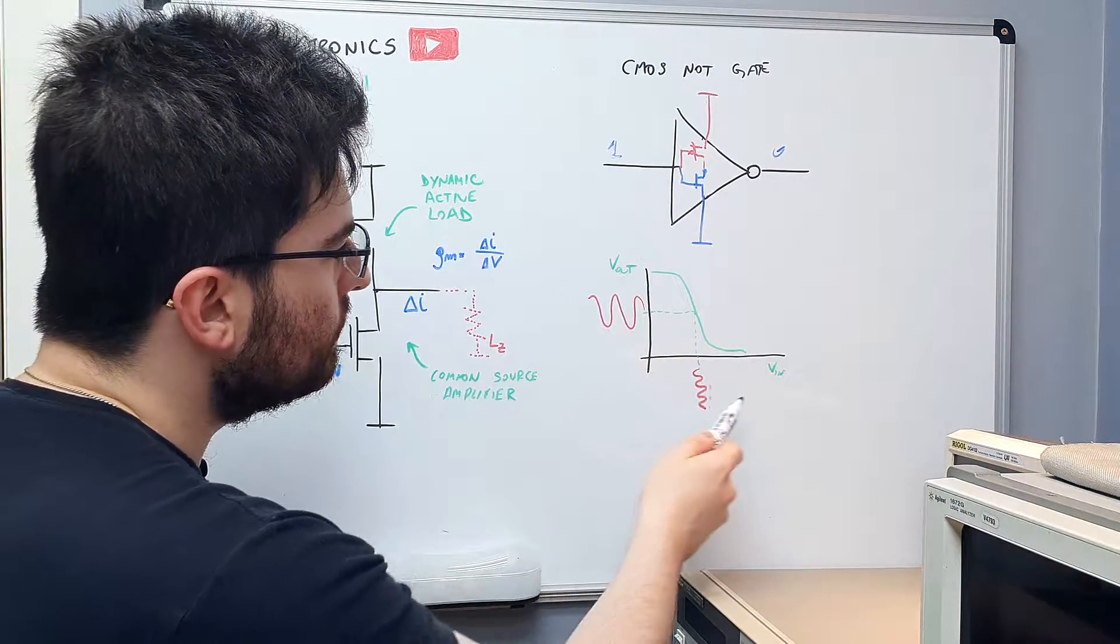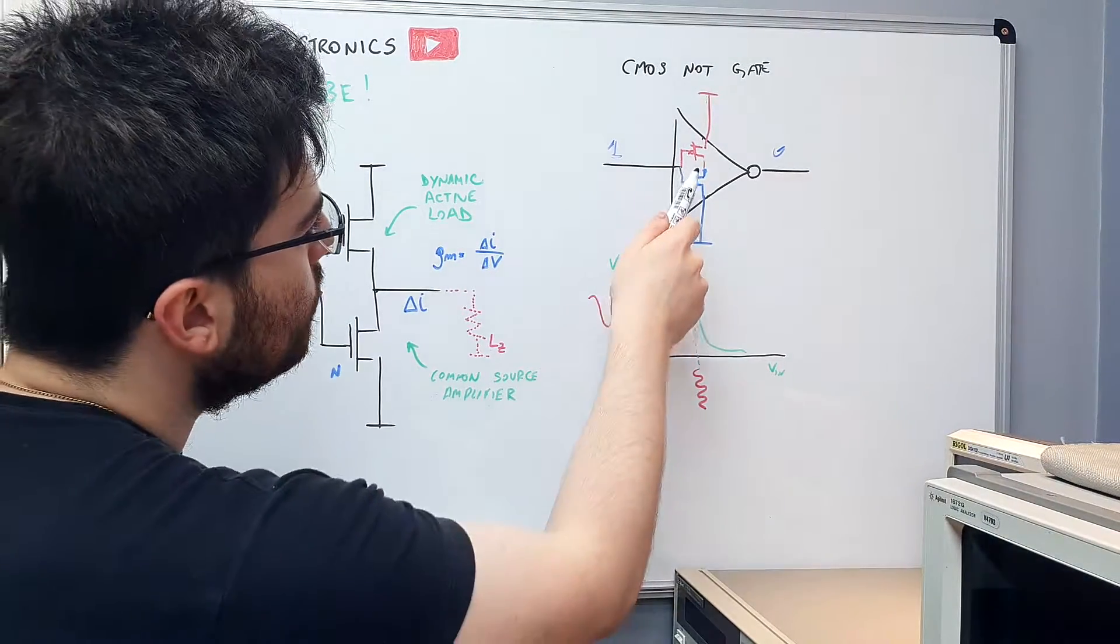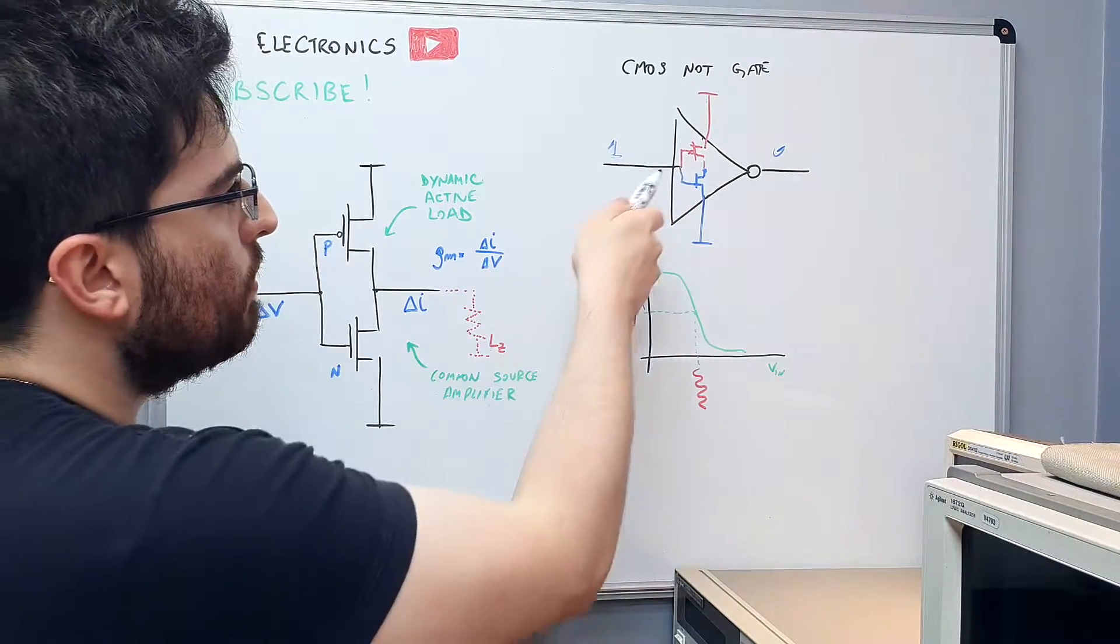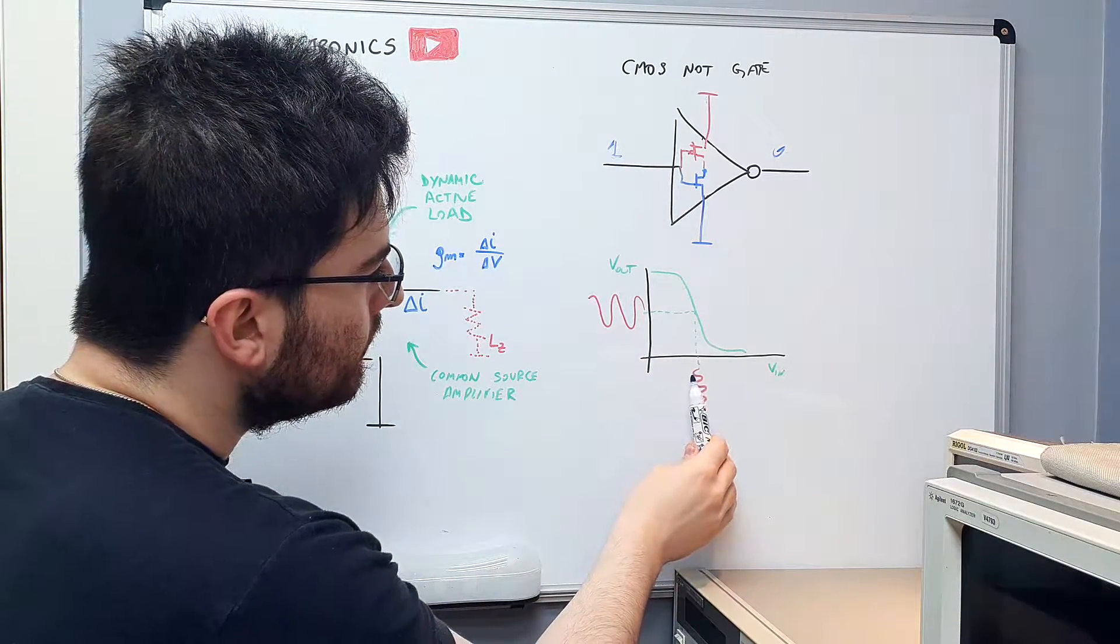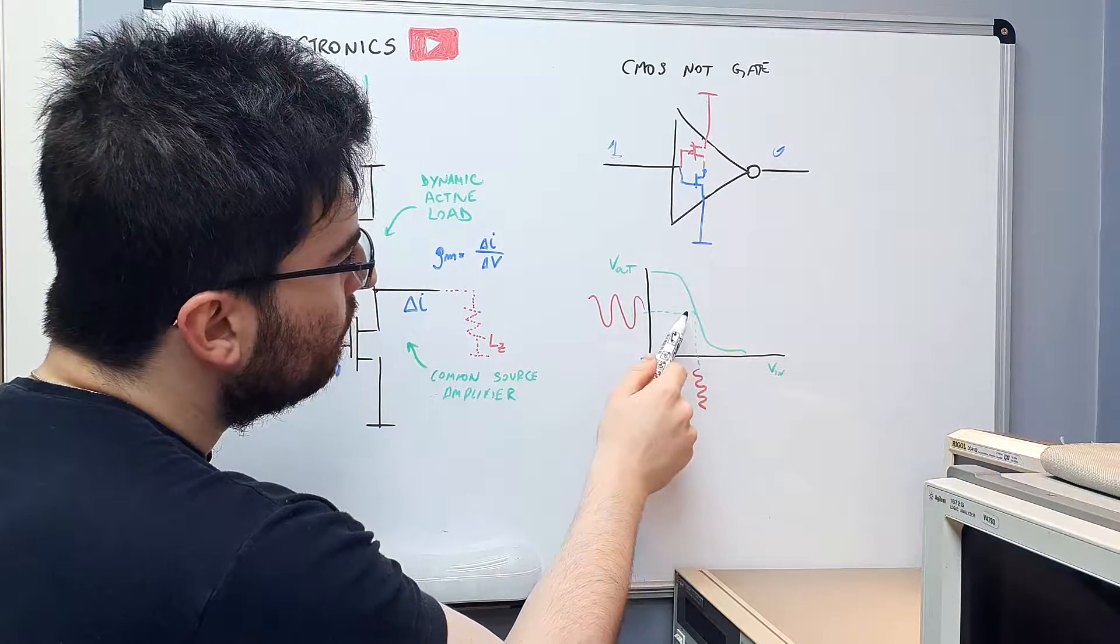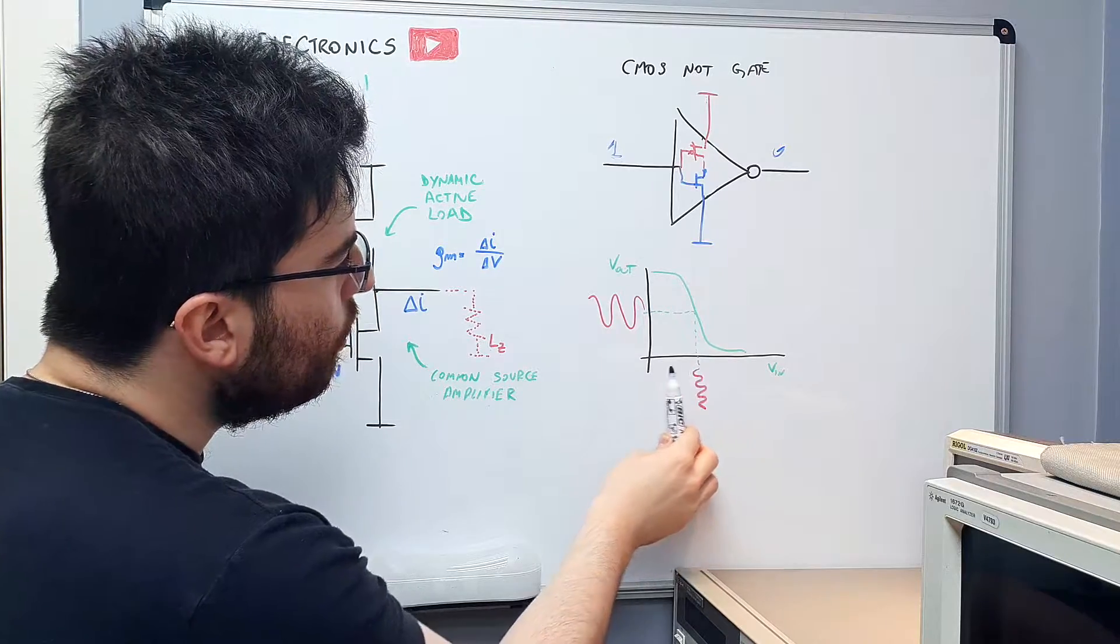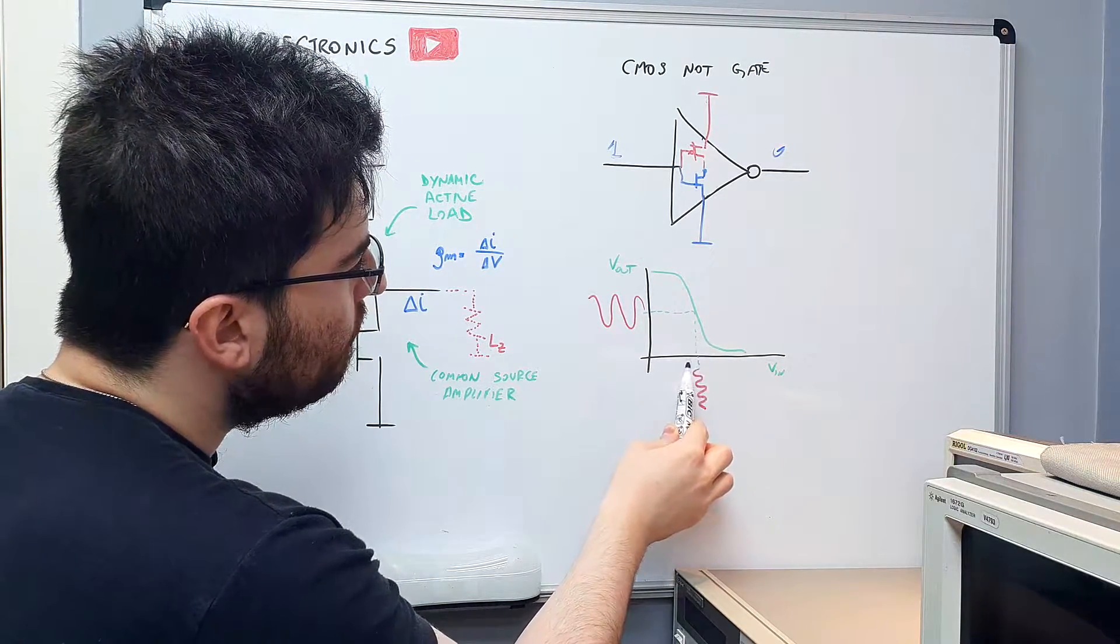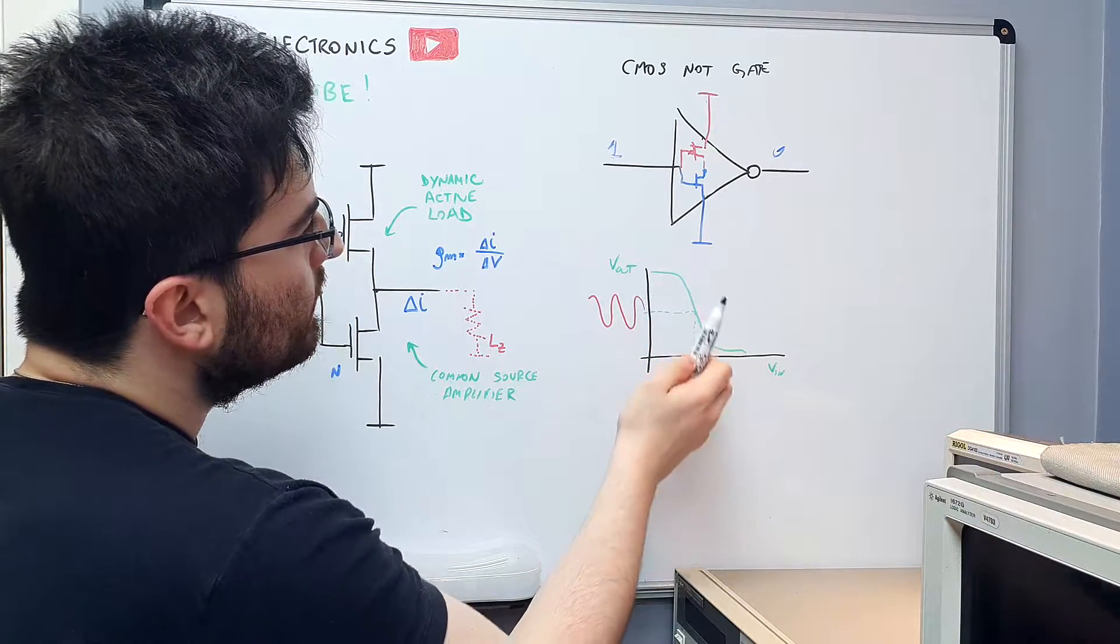This is the response of this circuit here, of this complementary NMOS and PMOS circuit. We can see that when the input is above half VCC, we have a very fast transition to zero and when we are below half VCC, we have a very fast transition to high.